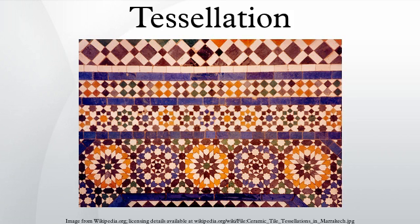A periodic tiling has a repeat pattern. Some special kinds include regular tilings with regular polygonal tiles all of the same shape, and semi-regular tilings with regular tiles of more than one shape and with every corner identically arranged. The patterns formed by periodic tilings can be categorized into 17 wallpaper groups.